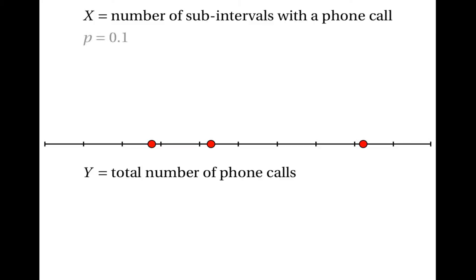Let's suppose that the probability of getting a phone call in any interval is 0.1. Then x will have the binomial distribution where 10 is the number of trials, because there are 10 sub-intervals, and 0.1 is the probability of success, because that's the probability of getting a phone call in an interval. That means the expected value of x will equal 1.